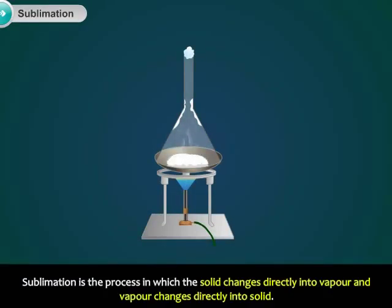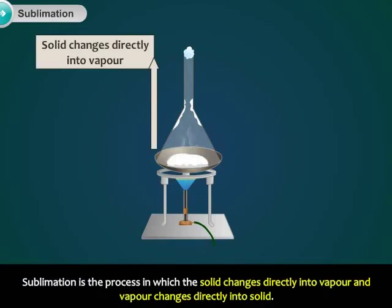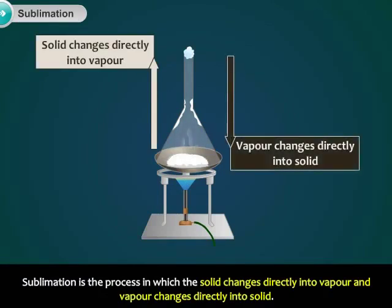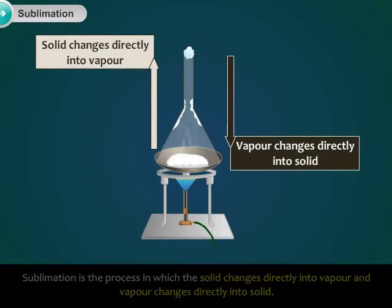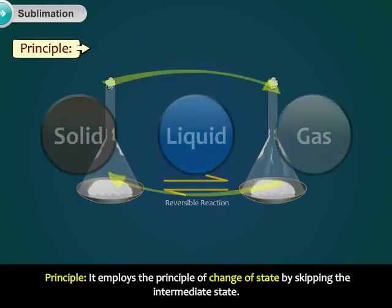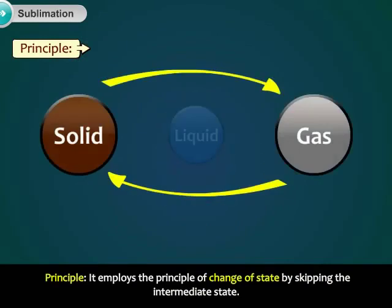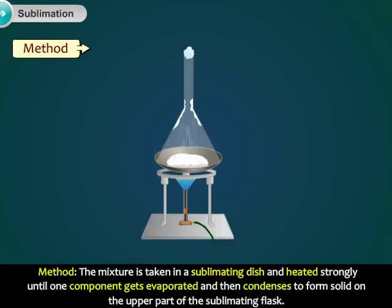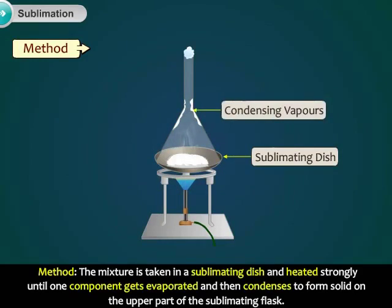Sublimation is the process in which the solid changes directly into vapor and vapor changes directly into solid. Principle: It employs the principle of change of state by skipping the intermediate state. Method: The mixture is taken in a sublimating dish and heated strongly until one component gets evaporated and then condenses to form solid on the upper part of the sublimating flask.